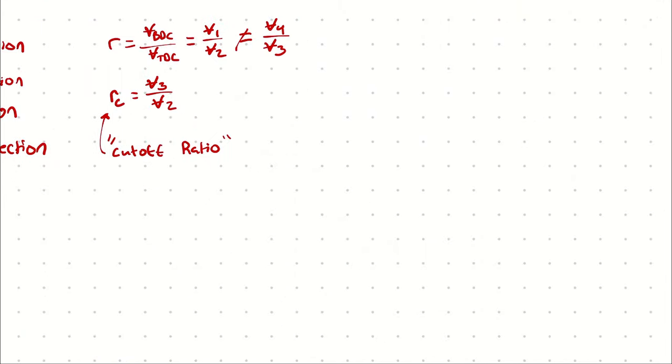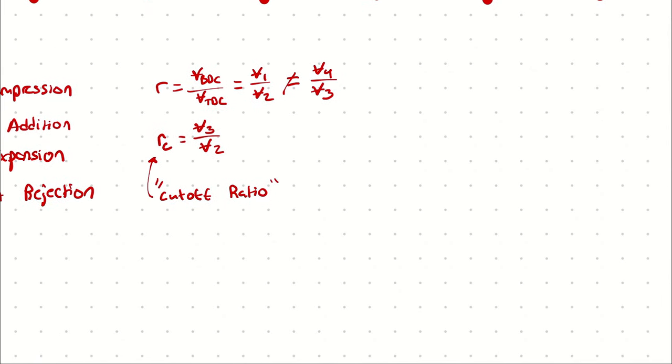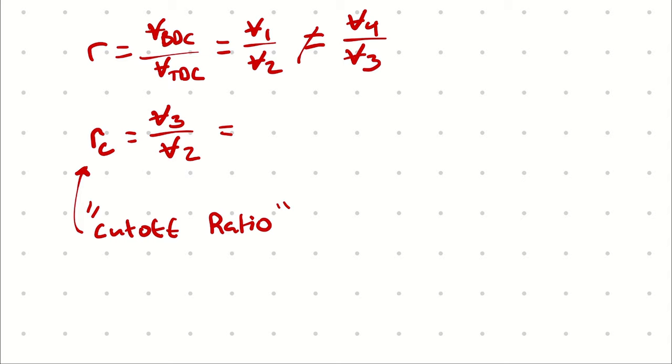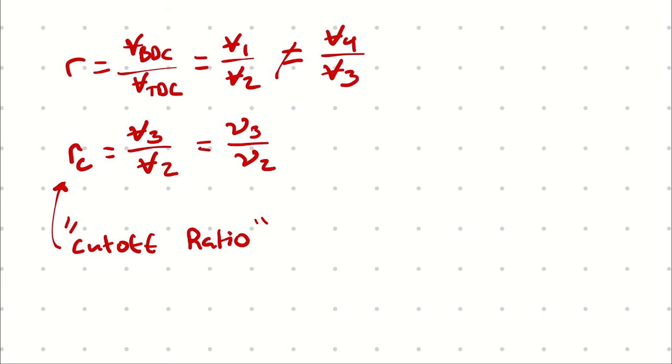Does that make sense? So the lower bound is 1, the upper bound is R. I will also point out that both of these can be represented as specific volumes as well because it's the same mass the whole time. And again, you want a small cutoff ratio. Smaller cutoff ratio implies better performing engine.